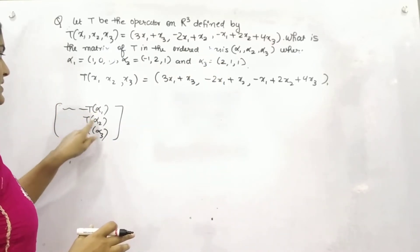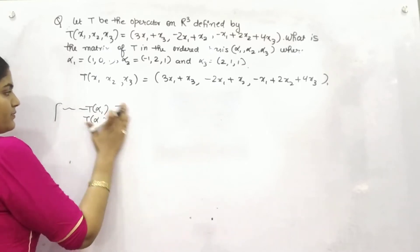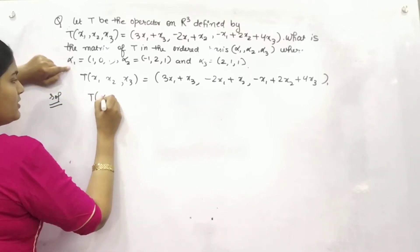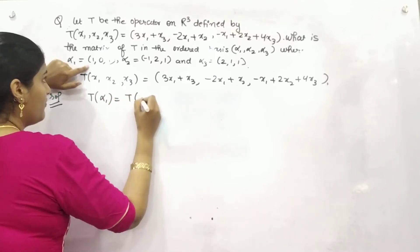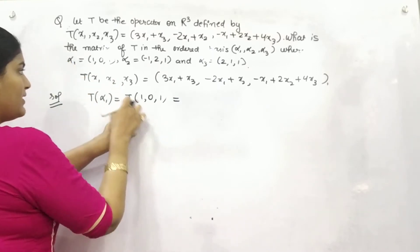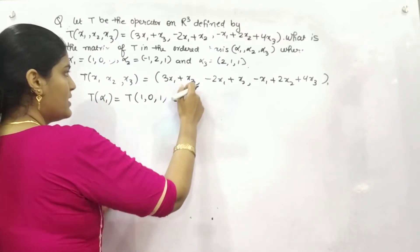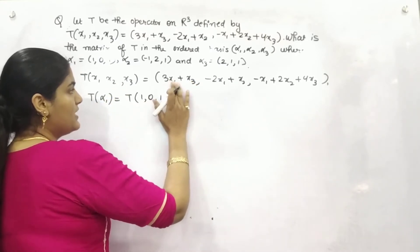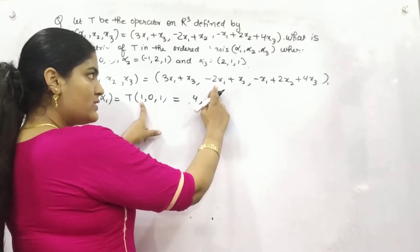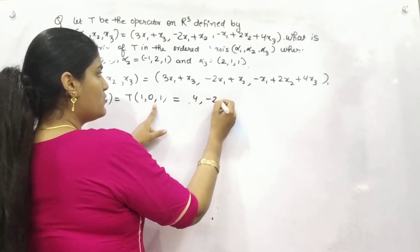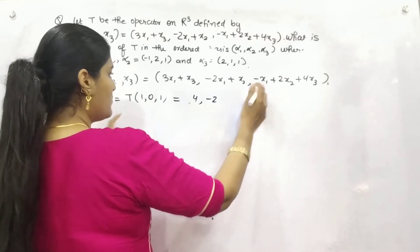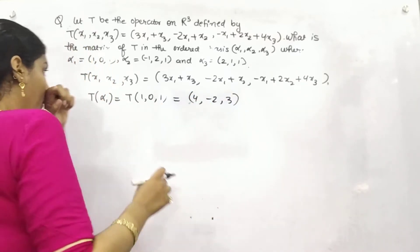Let's find T·α1. α1 is (1, 0, 1), so x1=1, x2=0, x3=1. Putting in the operator form: 3×1 + 1 = 4; minus 2×1 plus 0 = minus 2; and 4×1 minus 1 = 3. So T·α1 = (4, -2, 3).